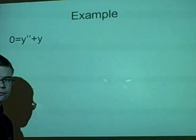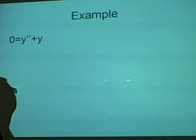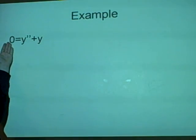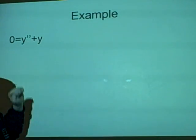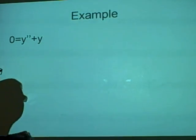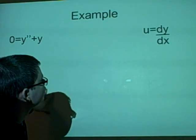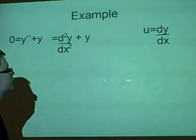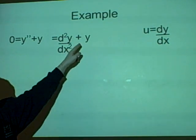Now we have an example. It's a very long example, I have to say. We have zero, see there's no independent variable, so you recognise them. So zero equals y double prime plus y. Now to start off with, first we should remember our substitution. Well, u equals dy over dx. And this can also be set out d²y over dx² plus y.